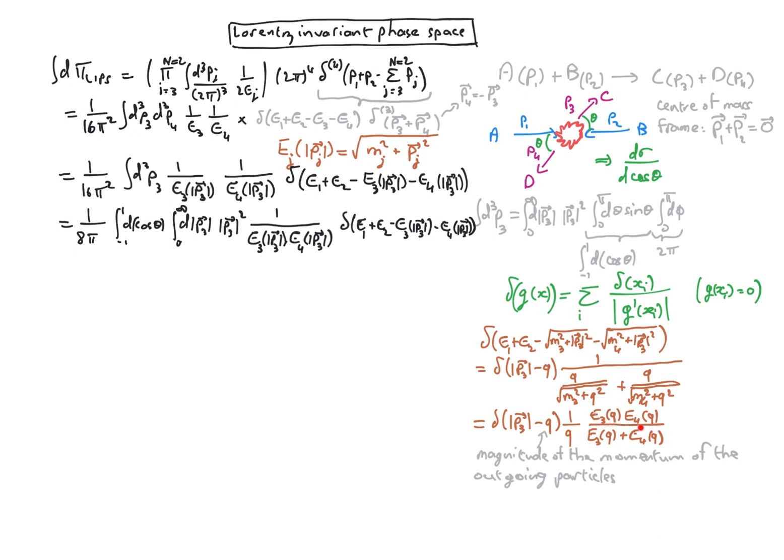The E3 plus E4 we have here is actually the same thing as E1 plus E2. In other words, the total energy in the center of mass, which is the same before and after the collision due to energy conservation.